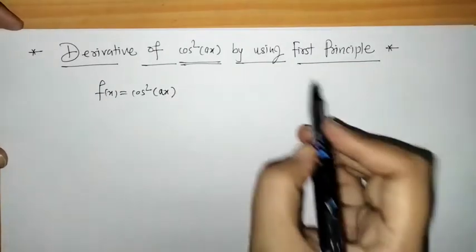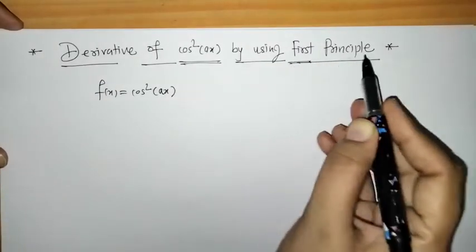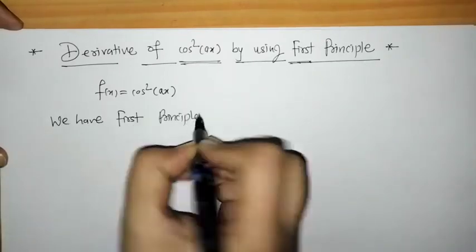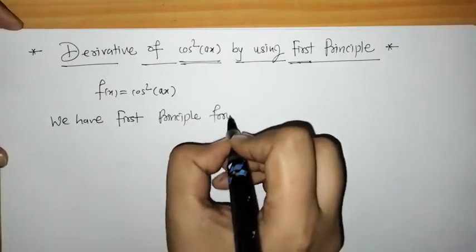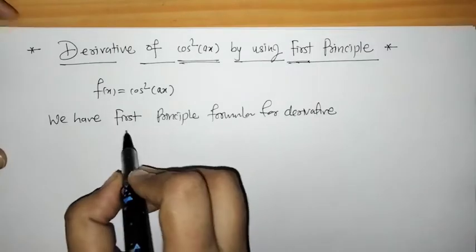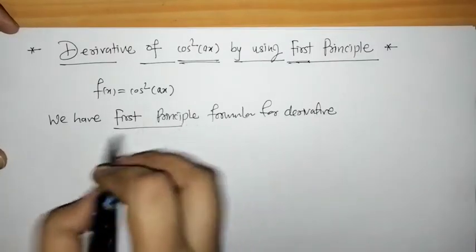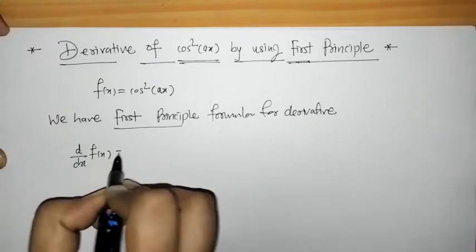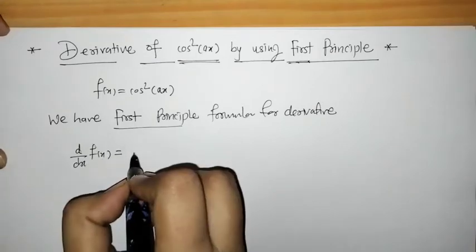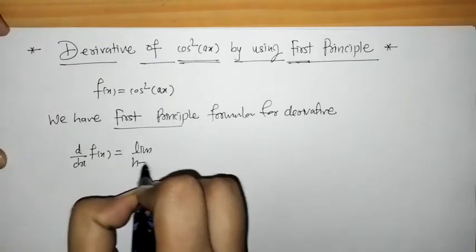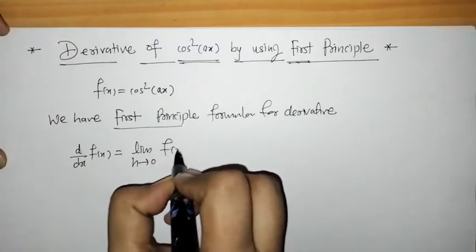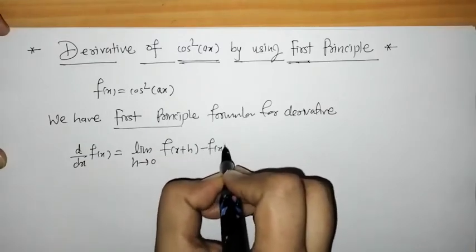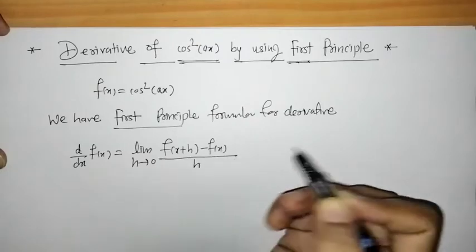Now we know what is the first principle for finding the derivative. By using this first principle formula, we can find the derivative of f(x), and this is given by the limit as h tends to 0 of f(x+h) minus f(x) upon h.